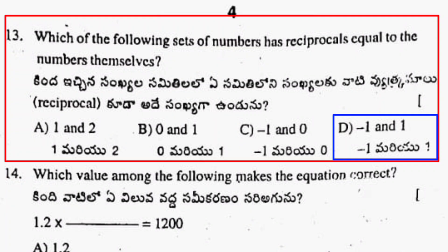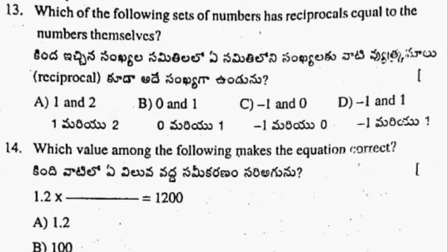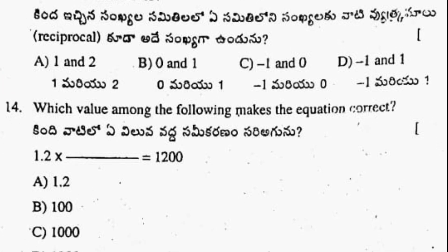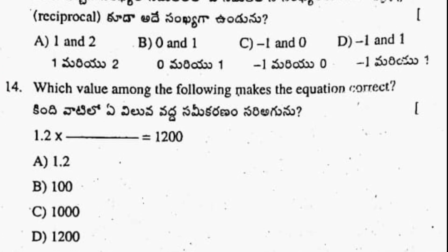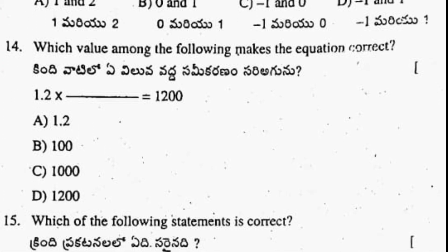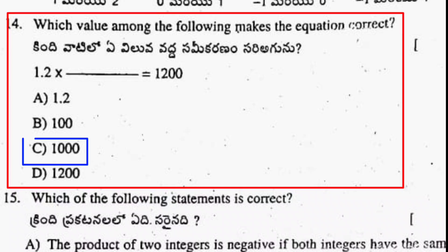Thirteenth question: option D, minus 1 and 1 is the correct answer. Next, fourteenth question: I will fill the bracket.